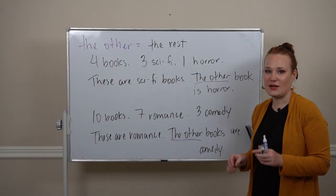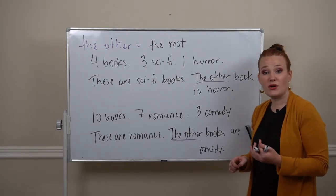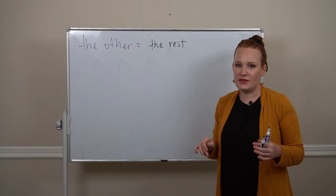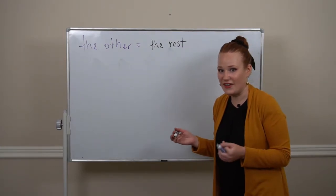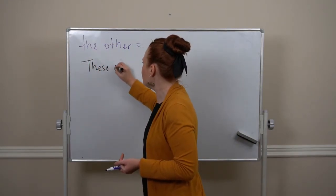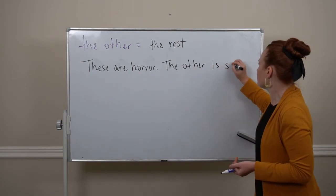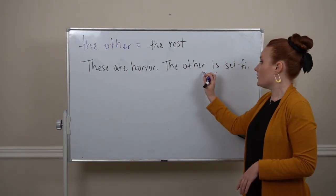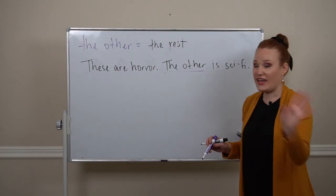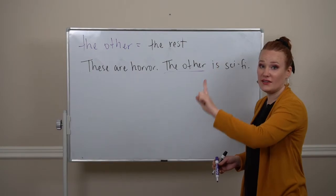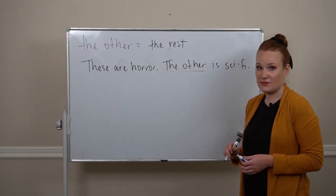Now 'the other' can also be used as a pronoun. For example, I have four books, three are horror, one is sci-fi. Again, something like these are horror, the other is sci-fi. So when we use 'the other' as a pronoun it is only singular. This can't be a plural form. The other talking about one other. This is a specific book I'm referring to. It is singular and specific when we're using it as a pronoun.